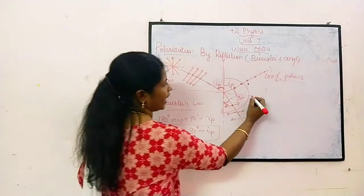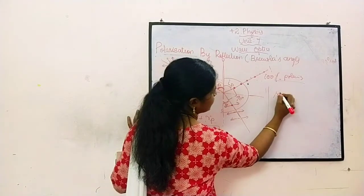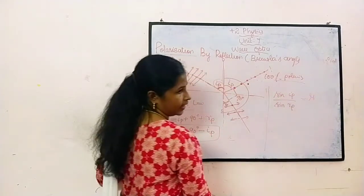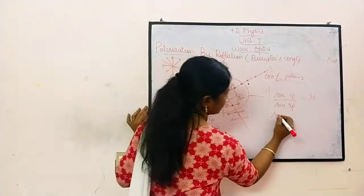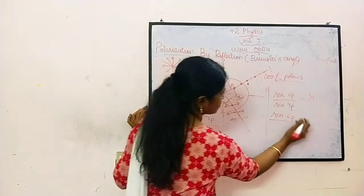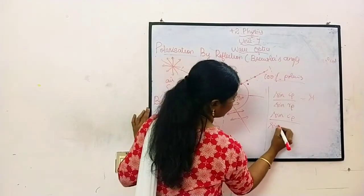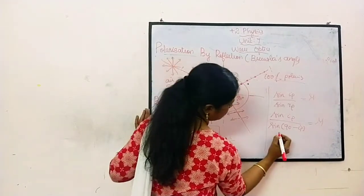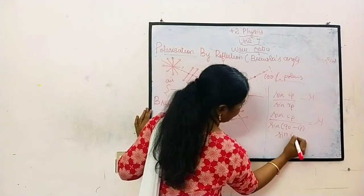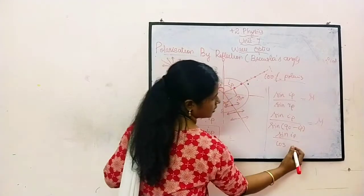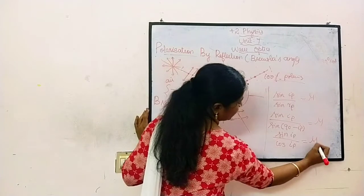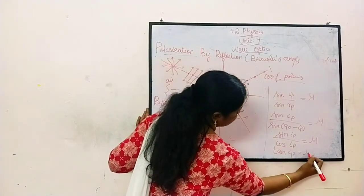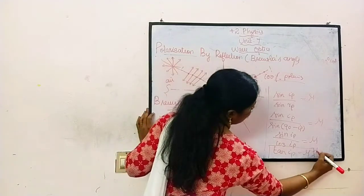We know Snell's law: sine of angle of incidence divided by sine of angle of refraction equals the refractive index mu. So sine IP divided by sine RP equals mu. Since RP equals 90 minus IP, sine of (90 minus IP) is cos IP. Therefore, sine IP divided by cos IP equals mu, which means tan IP equals mu. This relation is called Brewster's law.